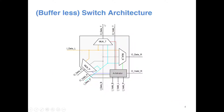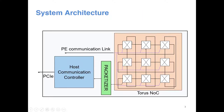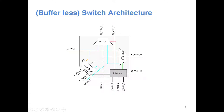This is the architecture of a single switch. You can see it basically has three ingress ports: data coming from the left, data coming from the bottom, and data coming from the PE. Similarly, it has three output ports: output to the top, output to the right, and output going to the PE.